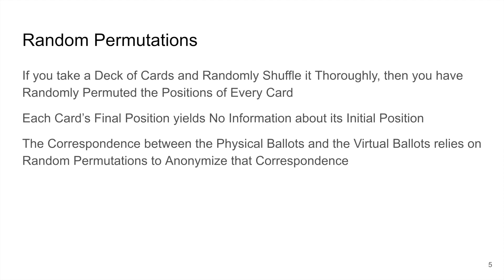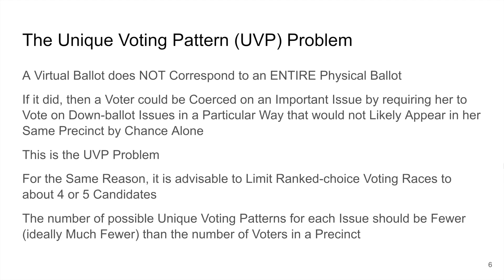To see how the switchboard preserves secrecy, it is necessary to understand the concept of a random permutation. If you take a deck of cards and randomly shuffle it thoroughly, then you have randomly permuted the position of every card. Each card's final position yields no information about its initial position. The correspondence between the physical ballots and the virtual ballots relies on random permutations to anonymize that correspondence. The secrecy of the switchboard backend depends on that anonymization. A virtual ballot does not correspond to an entire physical ballot except by unusual random occurrence. Instead, each virtual ballot is an amalgamation of various physical ballots. This is important because if every virtual ballot did correspond to an entire physical ballot, a voter could be coerced on an important issue by requiring her to vote on down-ballot issues in a particular way that would not likely appear in her same precinct by chance alone. This is the Unique Voting Pattern or UVP problem.